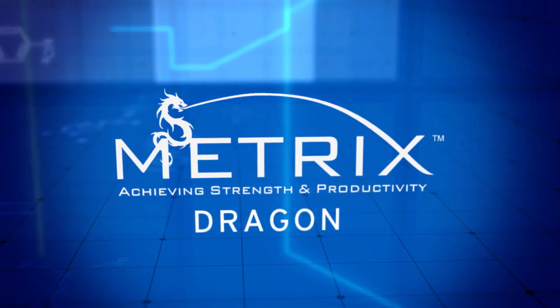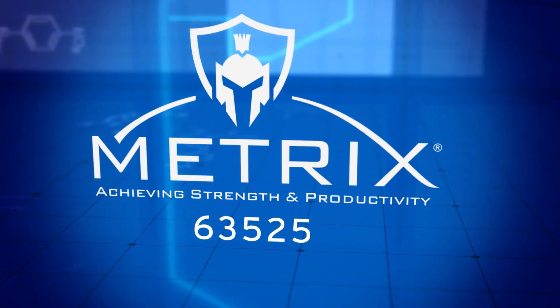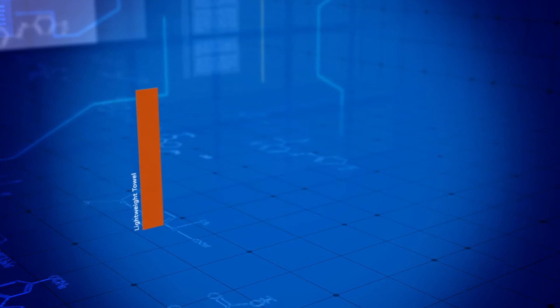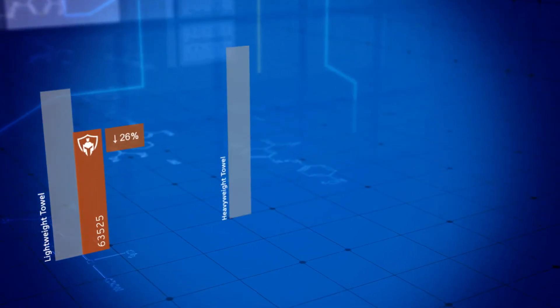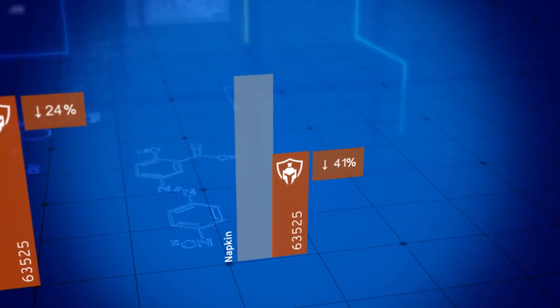Within our new metrics line, we are proud to introduce the patented and innovative metrics armor 63525. With this product, paper and tissue makers experience 15 to 40 percent better cost performance compared to traditional products on the market today.